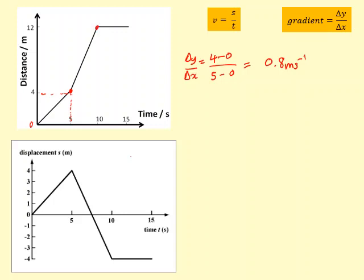You can see the second part, the object is moving much more quickly because the gradient is steeper. But again, I can work out the speed in the second part by doing change in y divided by change in x for that section.